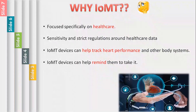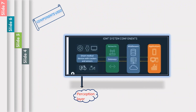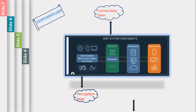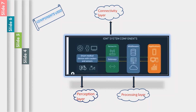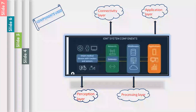Now let us see the components used in IOMT. The first is the perception layer, which consists of small medical devices with trackers and sensors that collect all kinds of health data. The second is the connectivity layer, responsible for data transmission from the perception layer to the cloud and vice versa through networks and gateways. The third is the processing layer, presented by cloud middleware or IOT platforms to store and manage data. The final is the application layer, which provides end users with data analytics, reporting, and device control through software solutions.